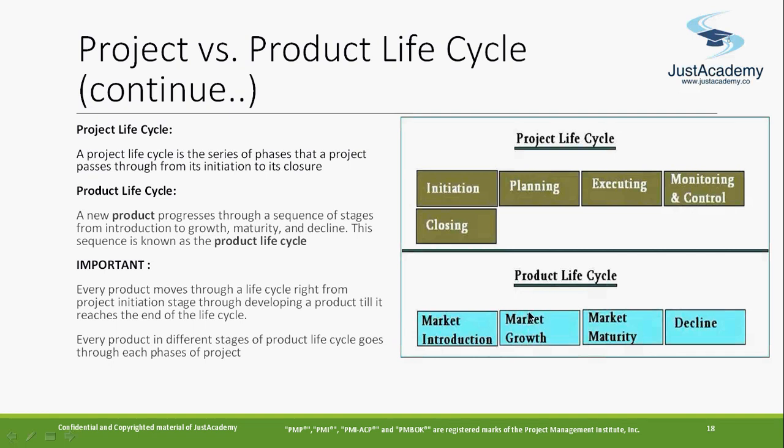Market growth can go on for one, two, four, or five years, covering every market across the world. The third phase is market maturity — after 15 to 20 years, you realize that saturation has come in the market. Whatever you are producing is getting consumed but there is no further increase in sales, so it becomes market maturity.